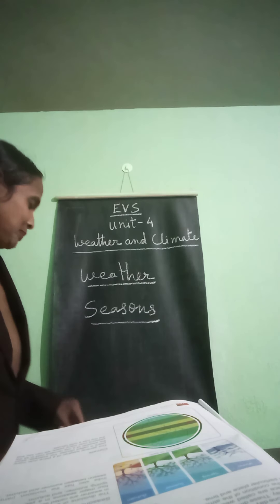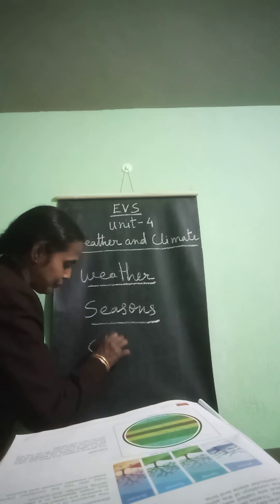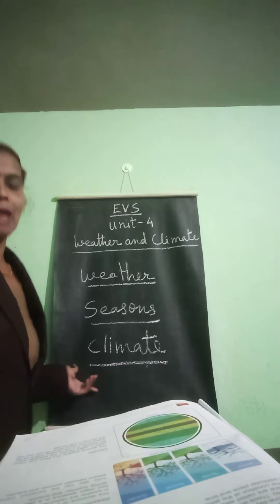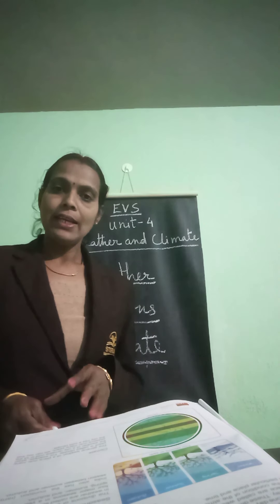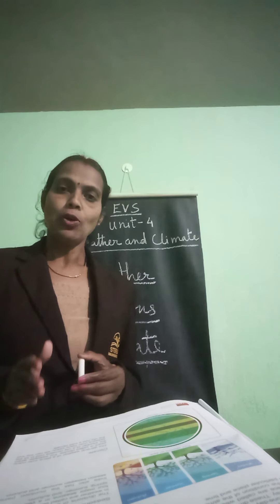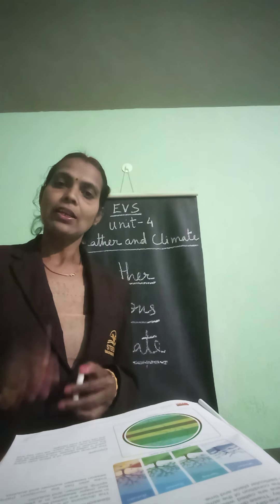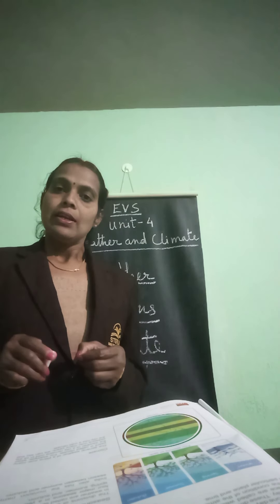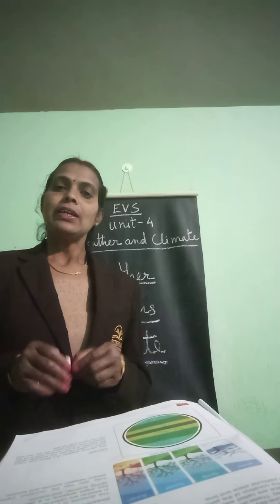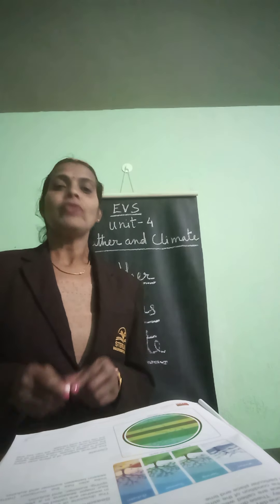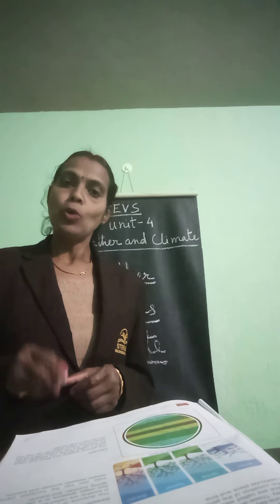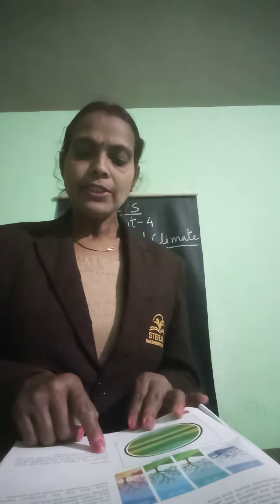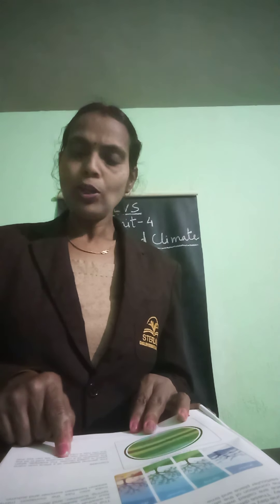Now, Climate. What is climate? What do you understand by climate? The general weather of a place over a long period of time is called climate. Suppose in one place it is always cold throughout the year, so we will say that the place has a cold climate. The general weather of a place over many years is called climate.